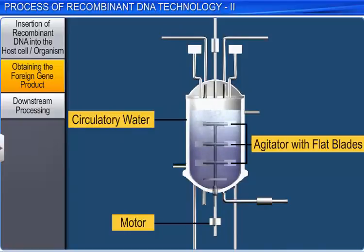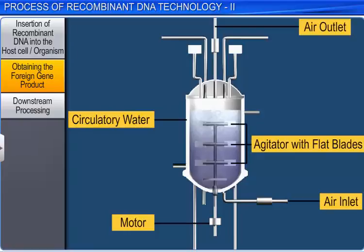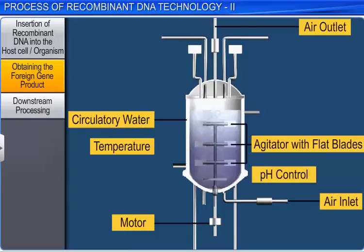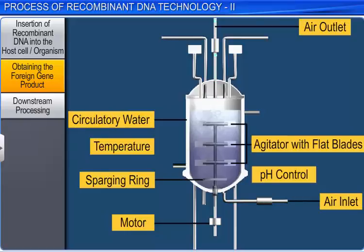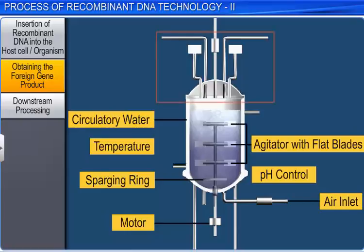The bioreactor also makes adequate provision for aeration, temperature, and pH control. For proper aeration, air can be forced in at the bottom of the tank through a porous ring called the sparging ring, by a process called sparging. Moreover, there is an outlet to remove air and waste gases at the top of the tank. The top of the tank also has a number of inlet tubes called ports, through which materials can be introduced or withdrawn.